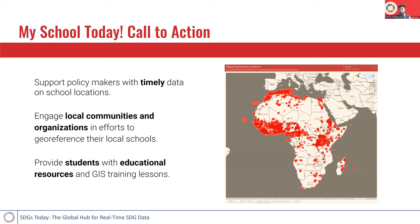We have several goals with the My School Today call to action. Primarily, we want to support policymakers and other SDG stakeholders with timely data on school locations — and timely is really the key there. We want that data to be locally informed, which is where we decided to take a bottom-up approach and utilize crowdsourcing in order to gather and solidify the data. Our goal is to engage local communities and organizations in efforts to georeference their schools, so the data is coming from the people who know it best.